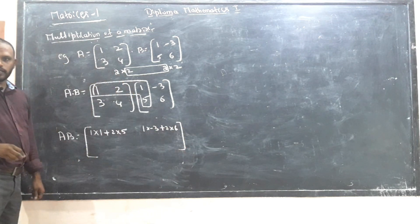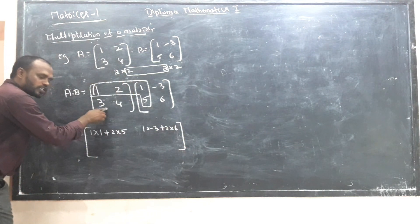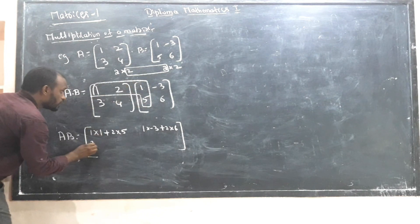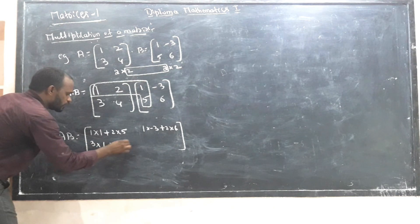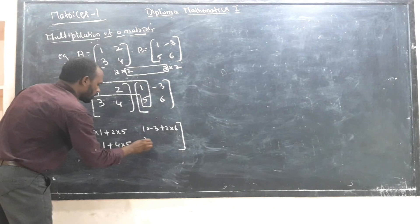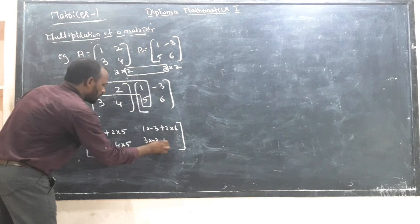Next, second row. Second row, first column is 3 into 1 plus 4 into 5. Second row, second column is 3 into minus 3 plus 4 into 6.